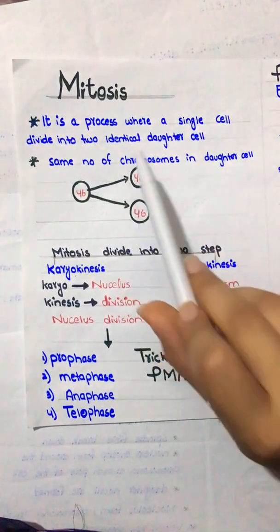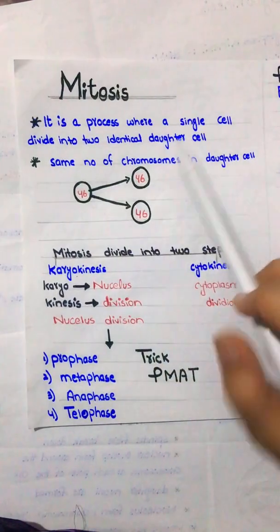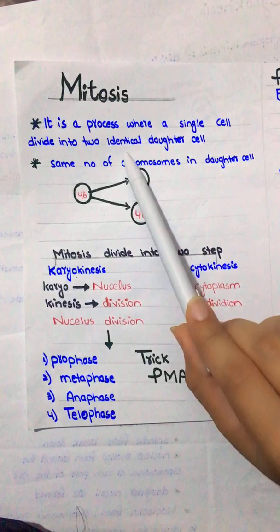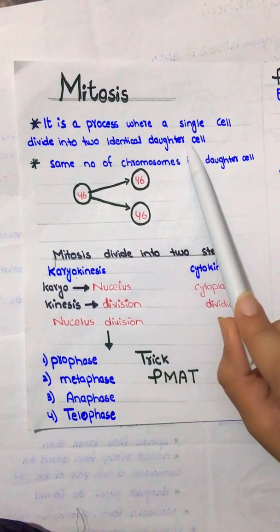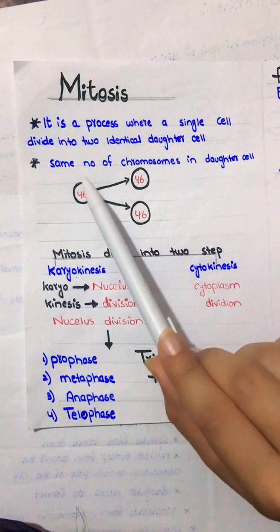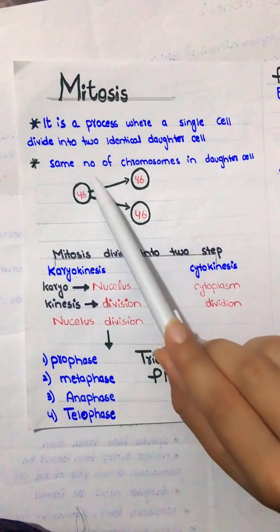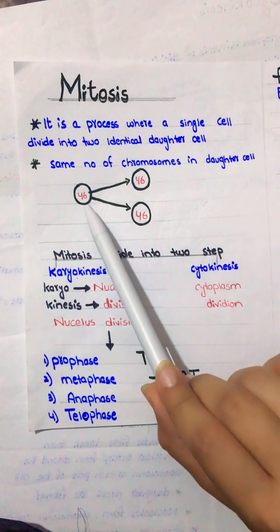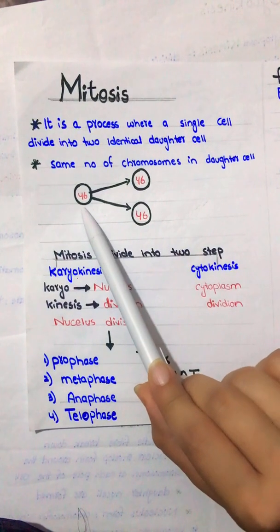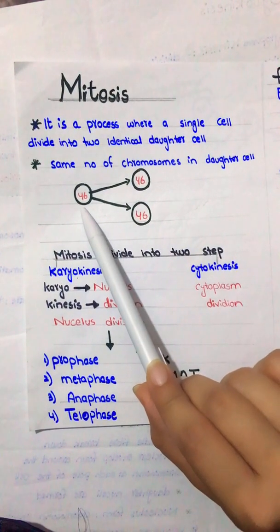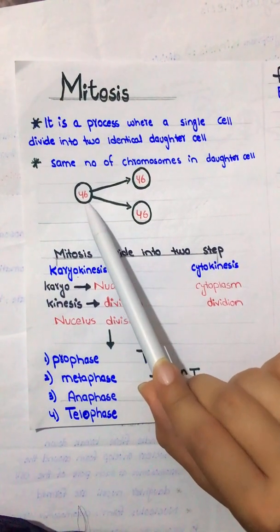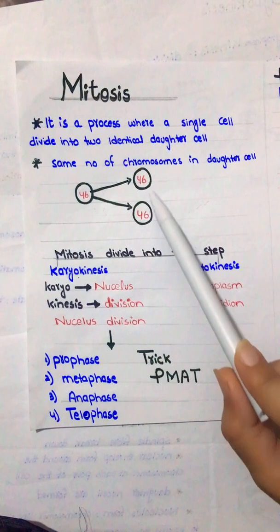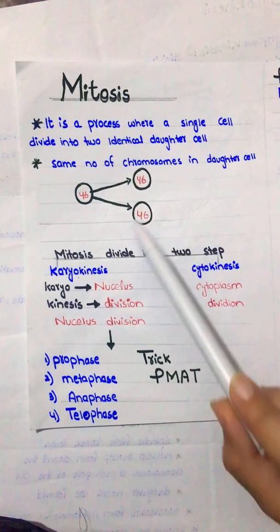Mitosis is a process where a single cell divides into two identical daughter cells. Mitosis maintains the same number of chromosomes in the daughter cells — meaning if the mother cell has 46 chromosomes, the daughter cells also have 46 chromosomes.